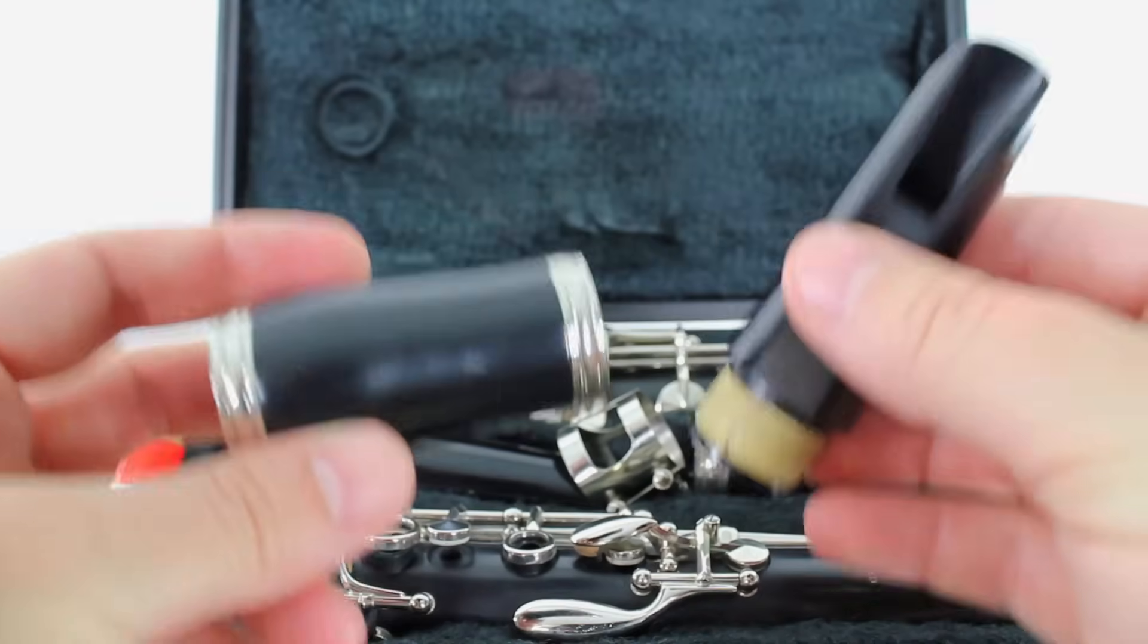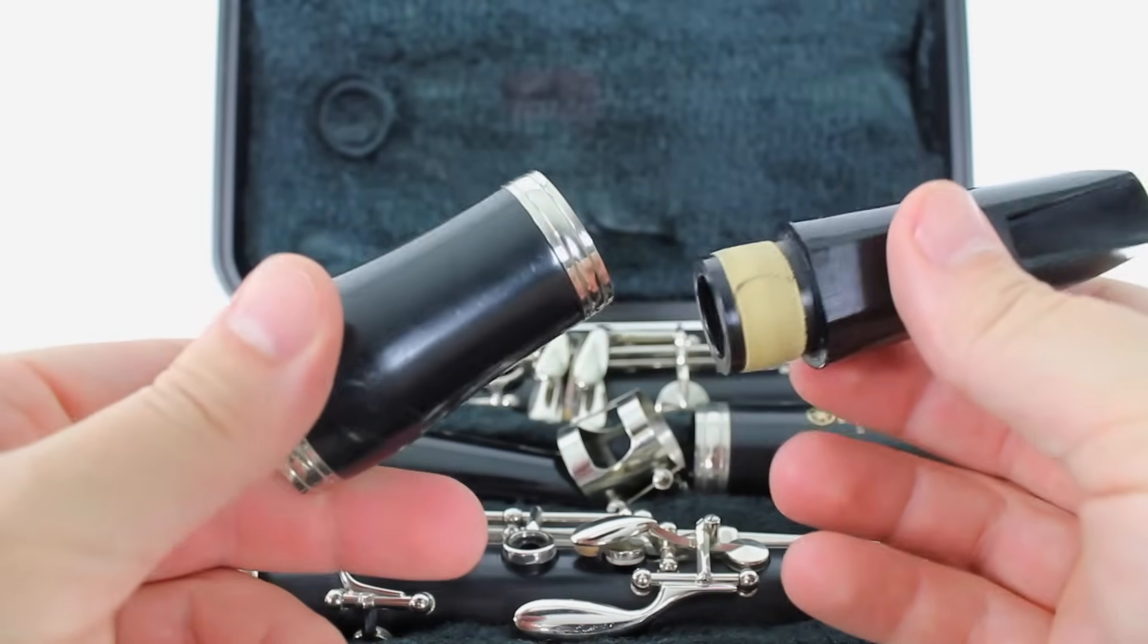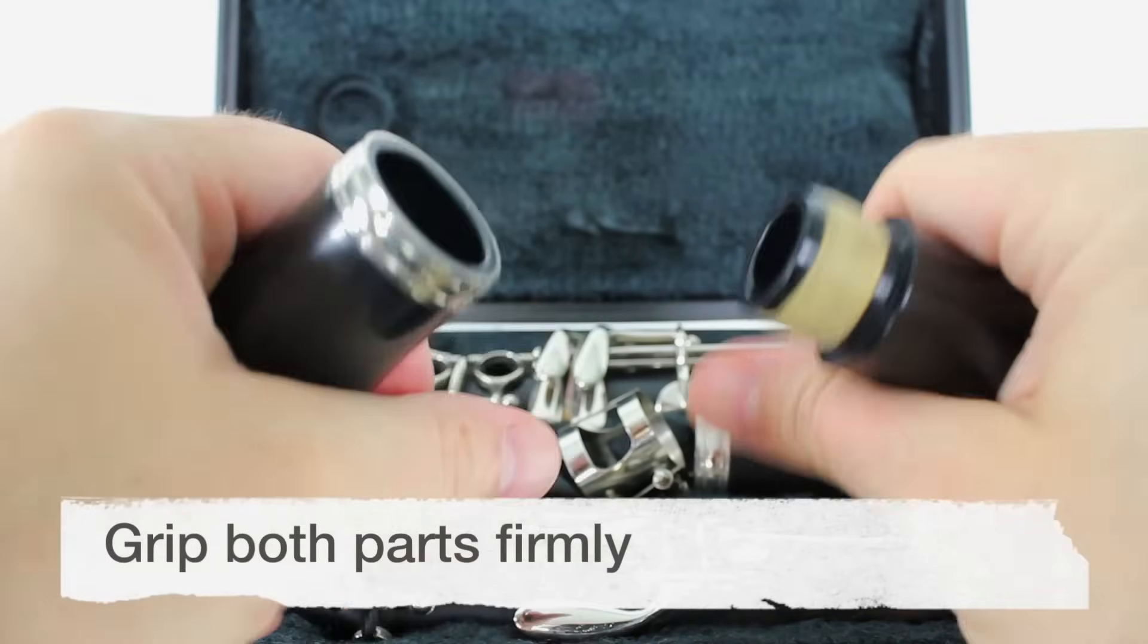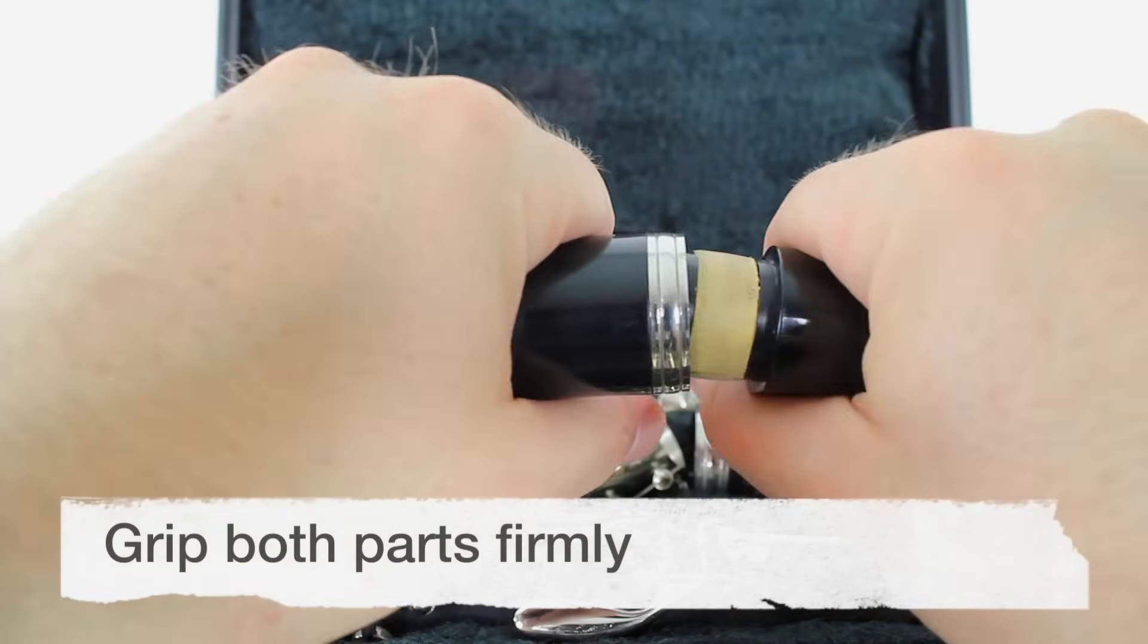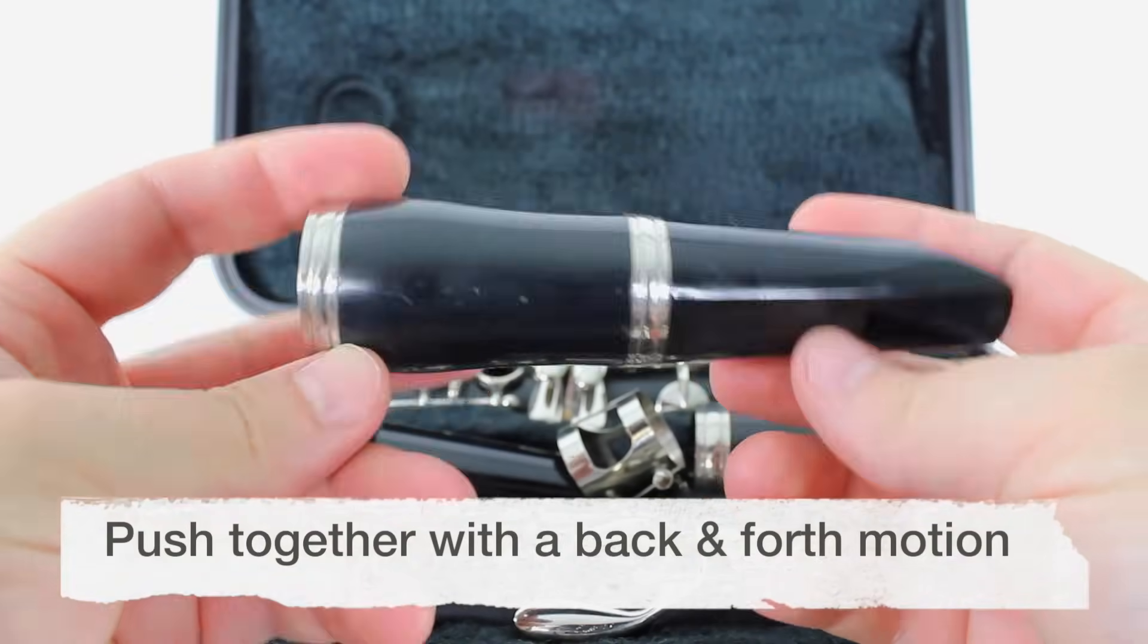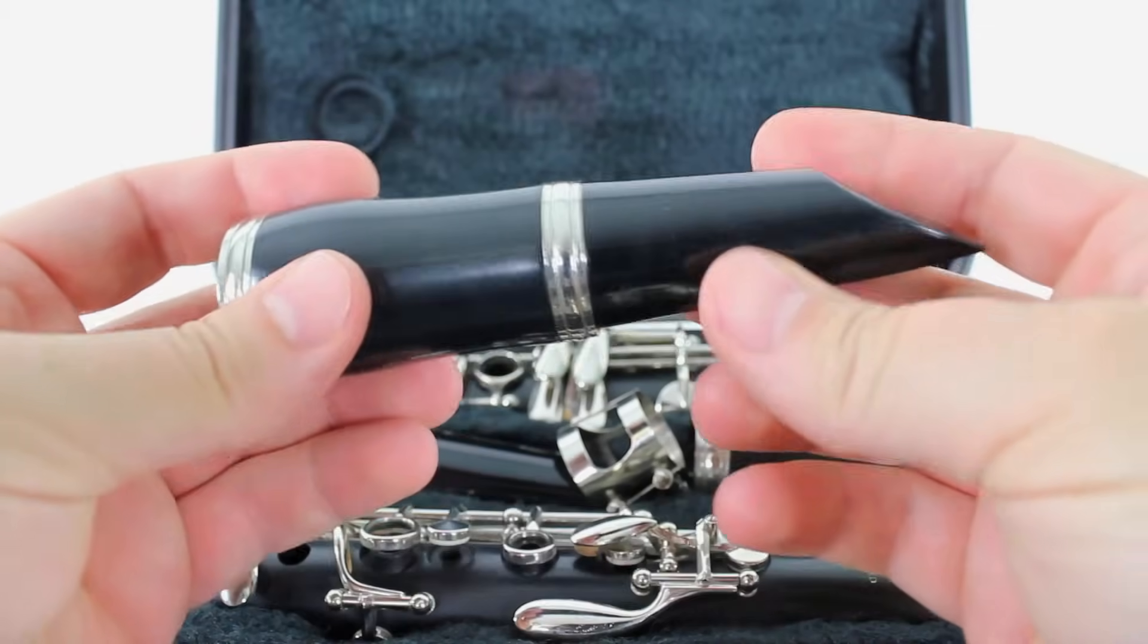Whenever you're putting two parts of your clarinet together, it's supposed to be airtight and a really snug fit. So we grab both parts with a firm grip and we shimmy back and forth while we push the parts together. And with a little bit of muscle, you're going to get these two parts together.